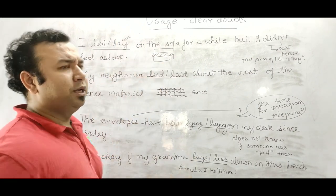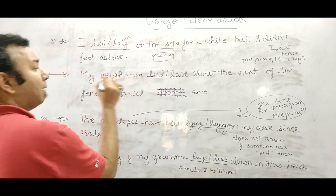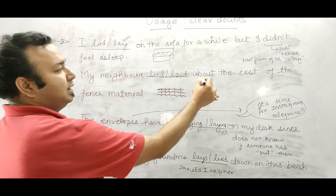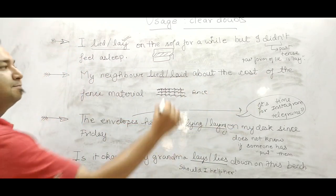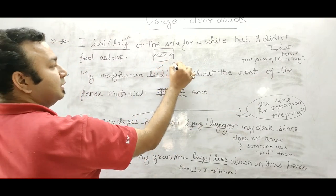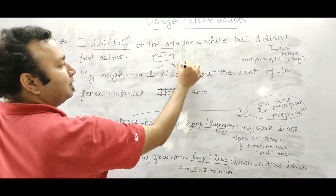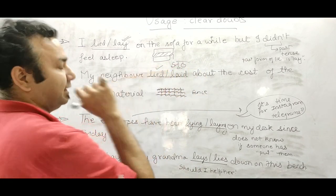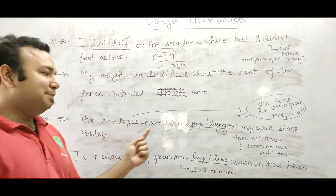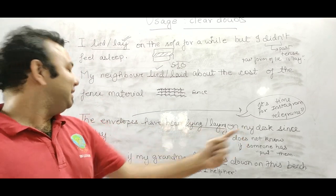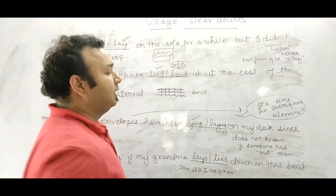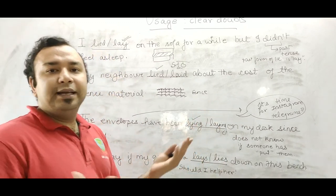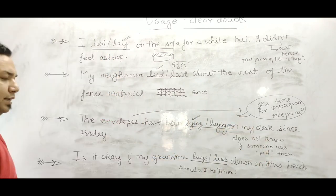My neighbor lied to me. I hate them. My neighbor lied or laid about the cost of the fence material. So, lied. Lied here. Lied, meaning untruth. Lied is used here. The envelopes have been lying on my desk since Friday. So, have been lying. Lying is used here, but we don't know who put them there.